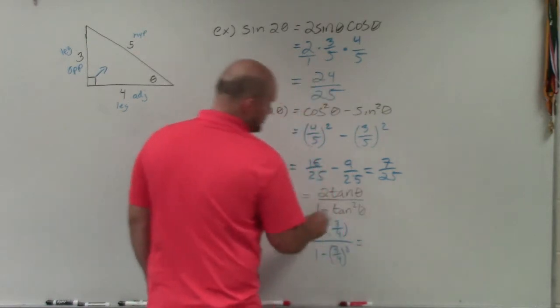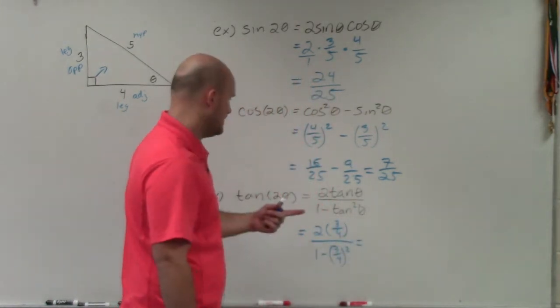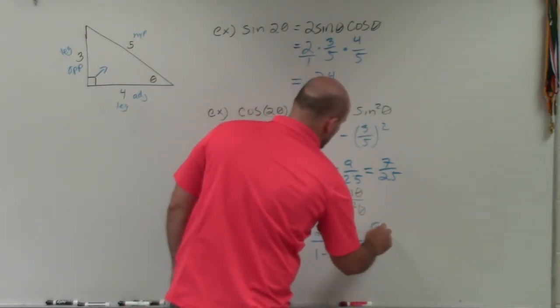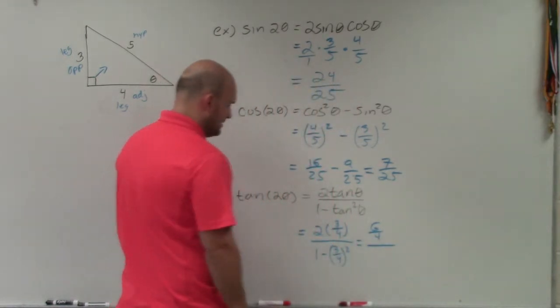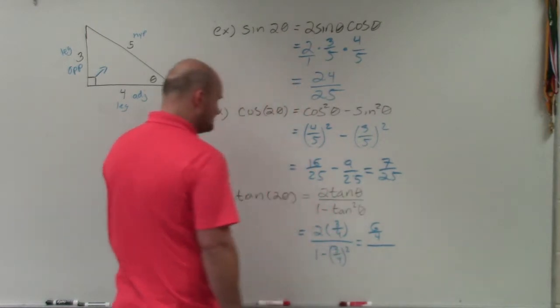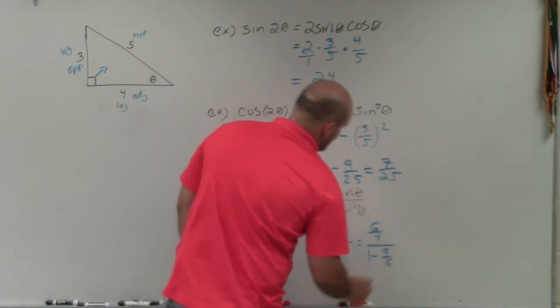Well, 2 times 3 over 4 is going to give me 6 over 4. 6 over 4 can reduce to 3 halves. Let's just write it over there. Let me just write it so you can see it. I told you I wasn't going to make any short steps. So that's 6 over 4. And that becomes 9 over 16. So 1 minus 9 over 16.